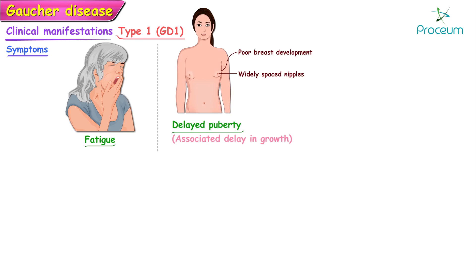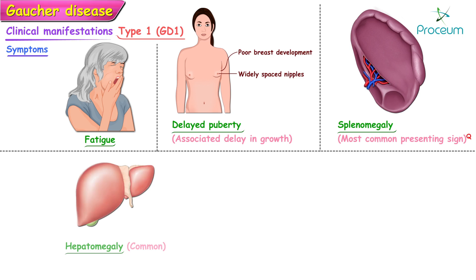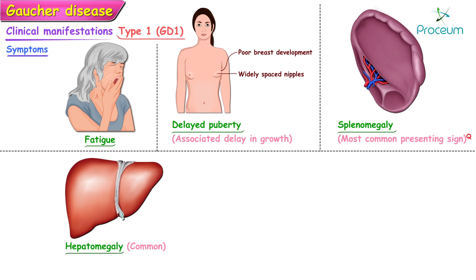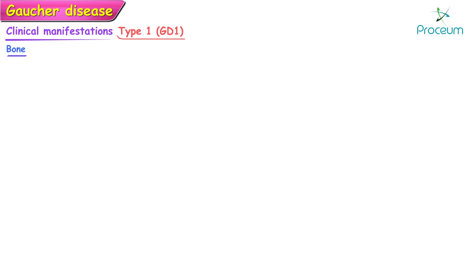Fatigue is common across all types, and there can also be pubertal delay with associated delay in growth. Splenomegaly is the most common presenting sign. Hepatomegaly can also occur, but the liver size increases relatively less in comparison with the spleen. Hepatic fibrosis may occur, but hepatic failure, cirrhosis, and portal hypertension are uncommon in patients with Gaucher's disease.